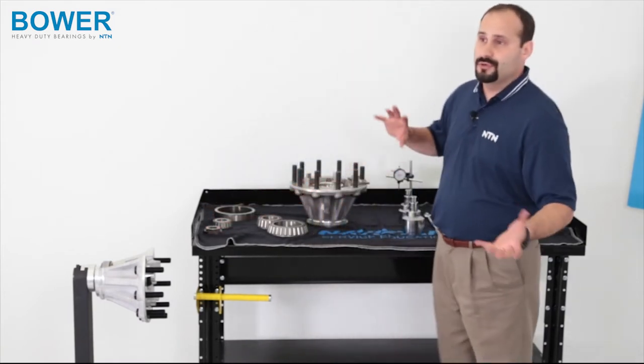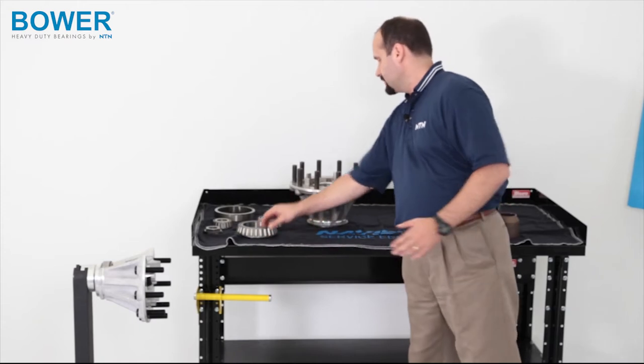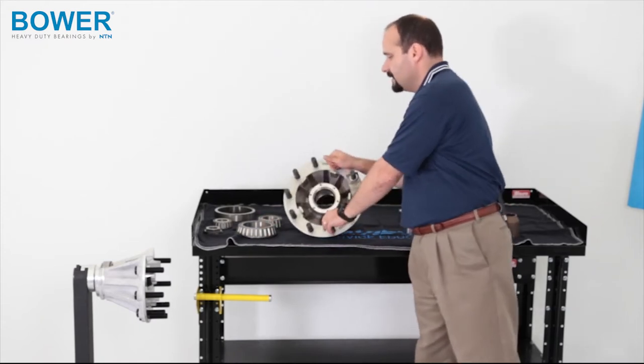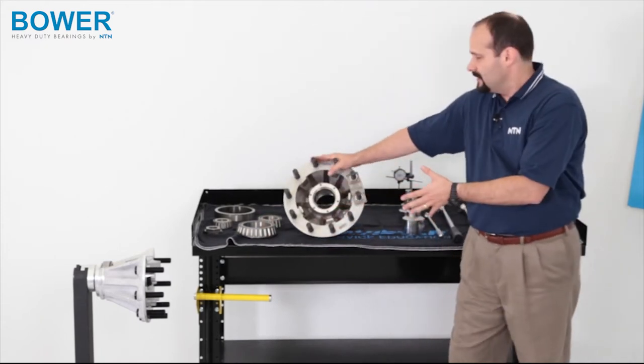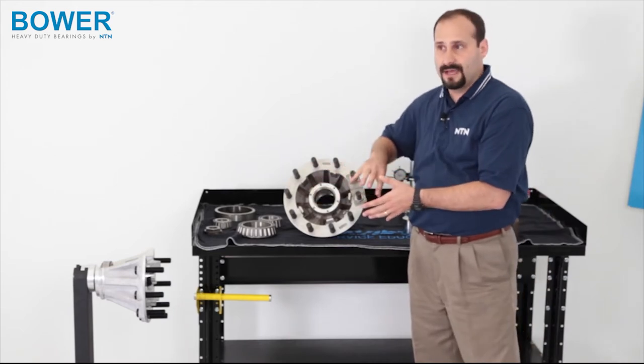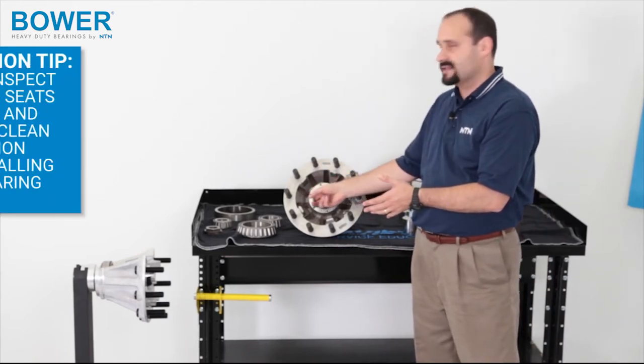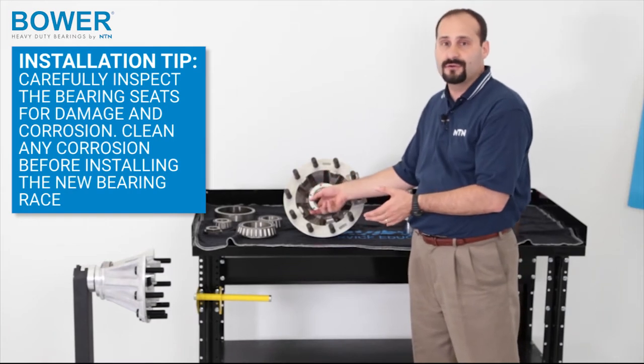Before we can put the new bearings in, we have to get the old races out. So, we'll have our hub here. We've gotten the hub off of the truck. We'll have removed the races from the hub. And what you want to do is you want to check the bearing seats or where those races were sitting in the housing.